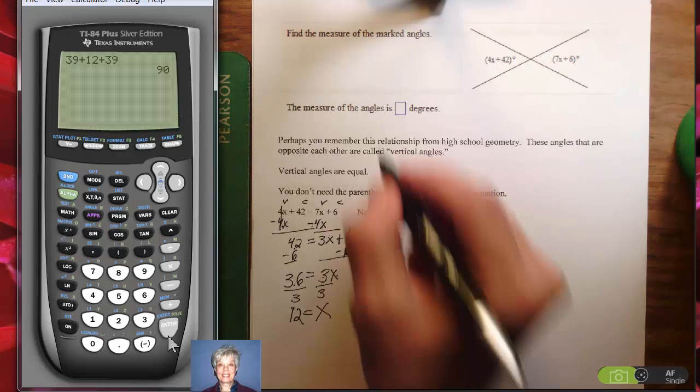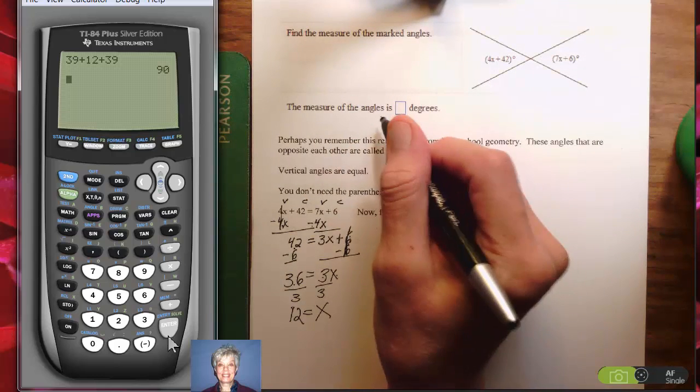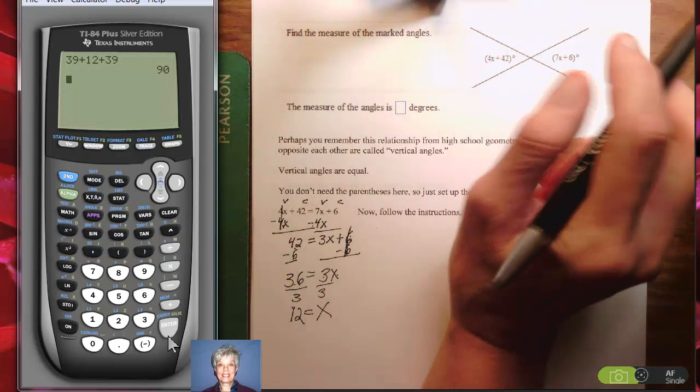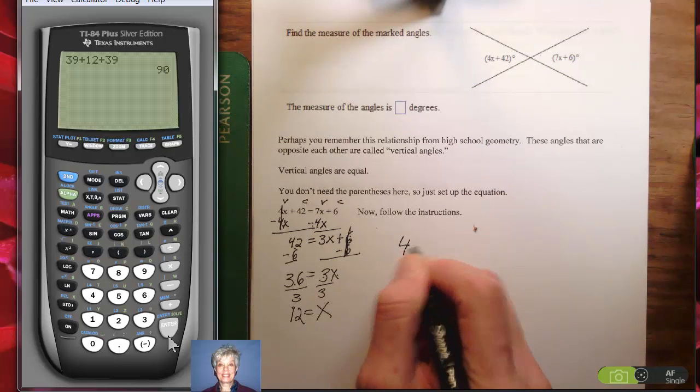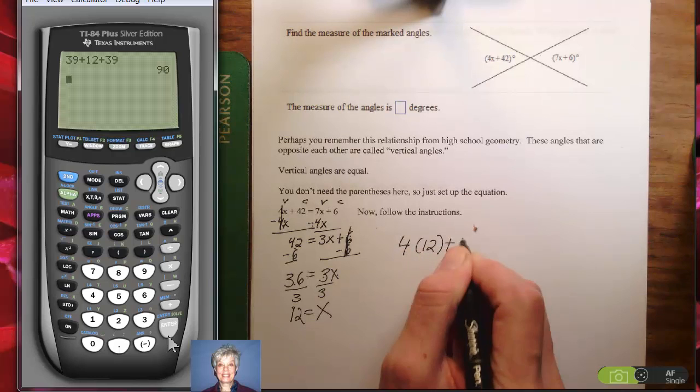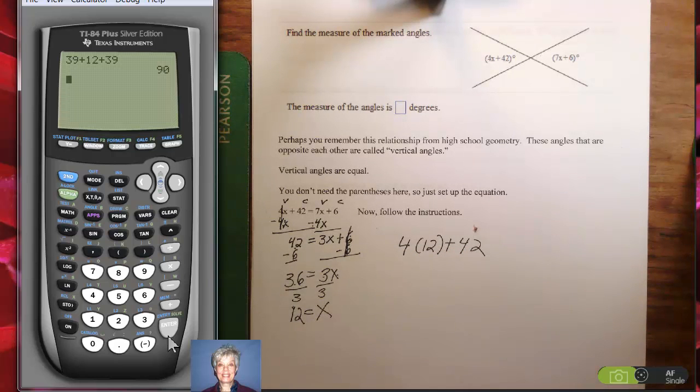Now what we're being asked to do up here is find the measure of each of the angles, and they're going to be equal because vertical angles are equal. So all I need to do is find one. 4 times 12 plus 42. Let's put that in the calculator. 4, parentheses, 12, parentheses closed, plus 42, enter. They're 90 degrees each. Why do I doubt that? Did I miscopy? Is that really true?